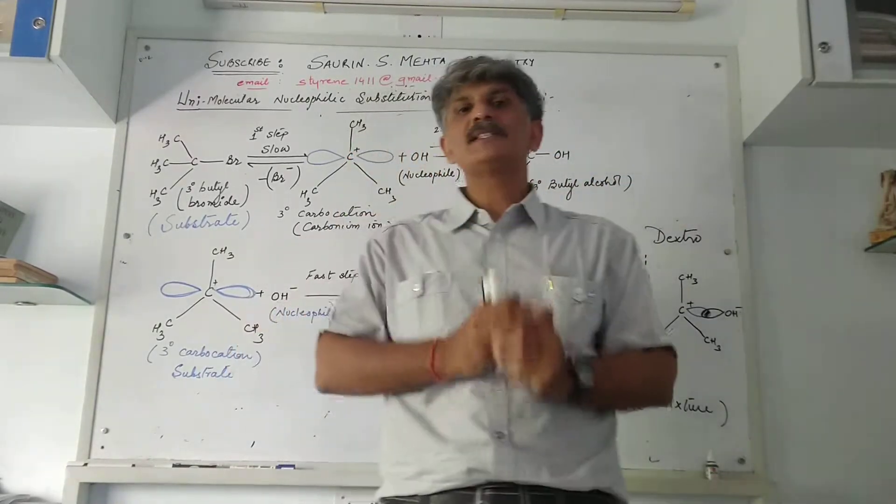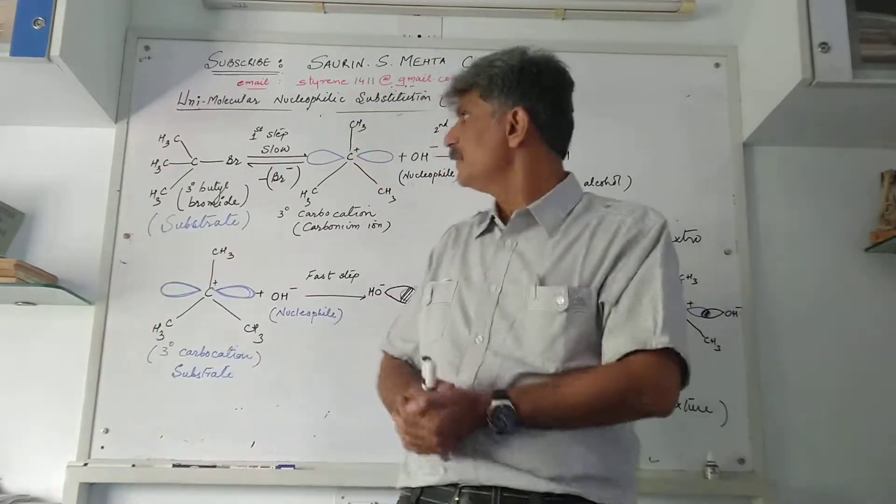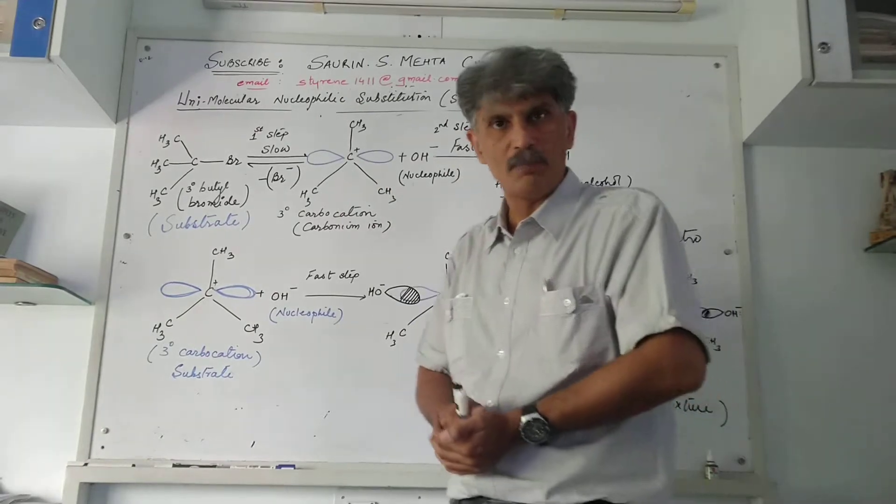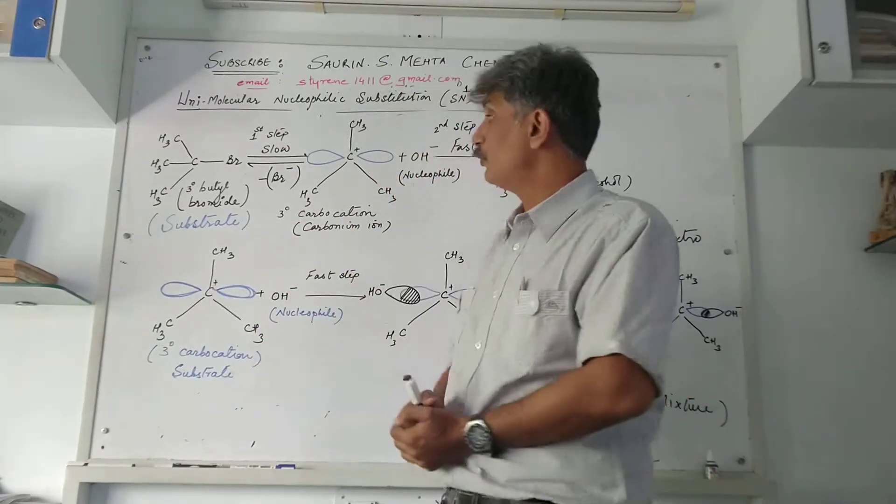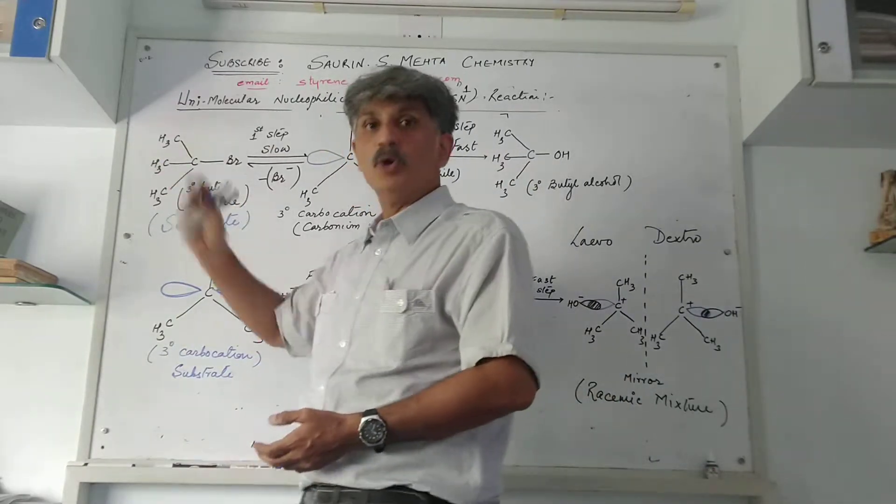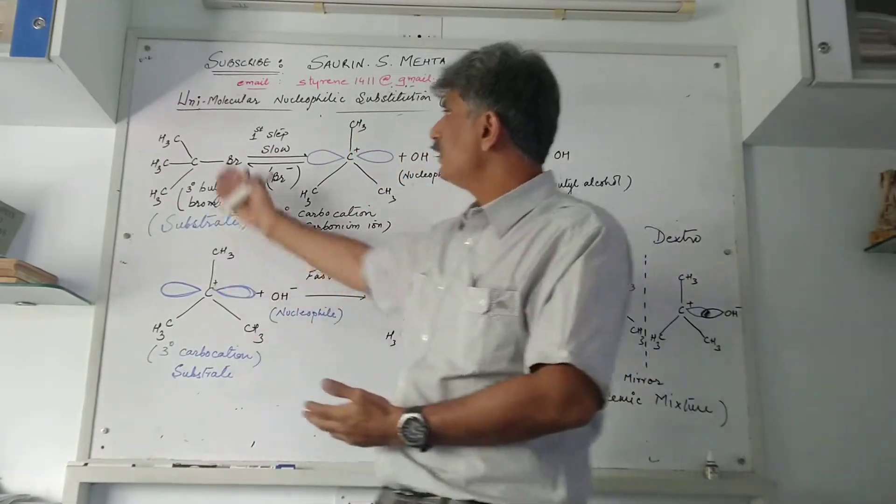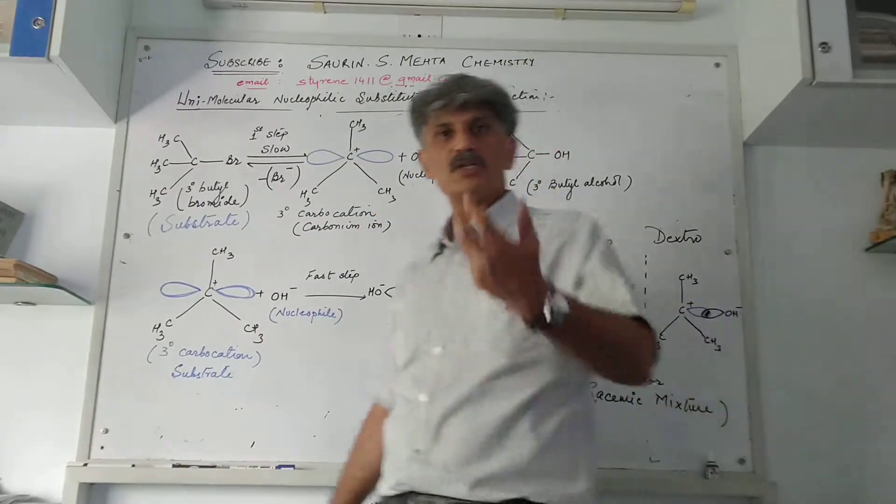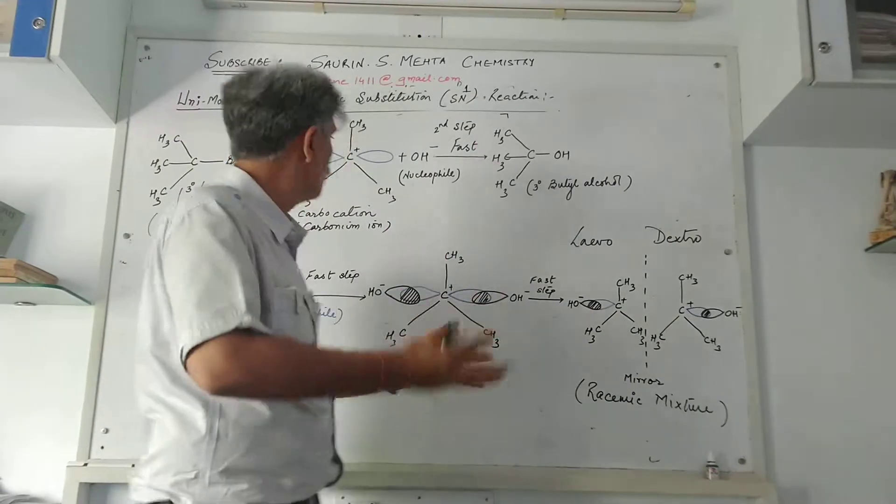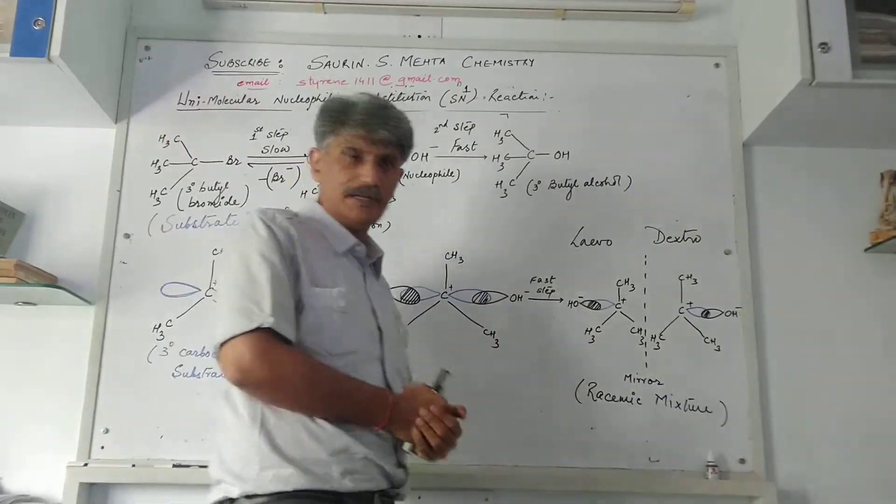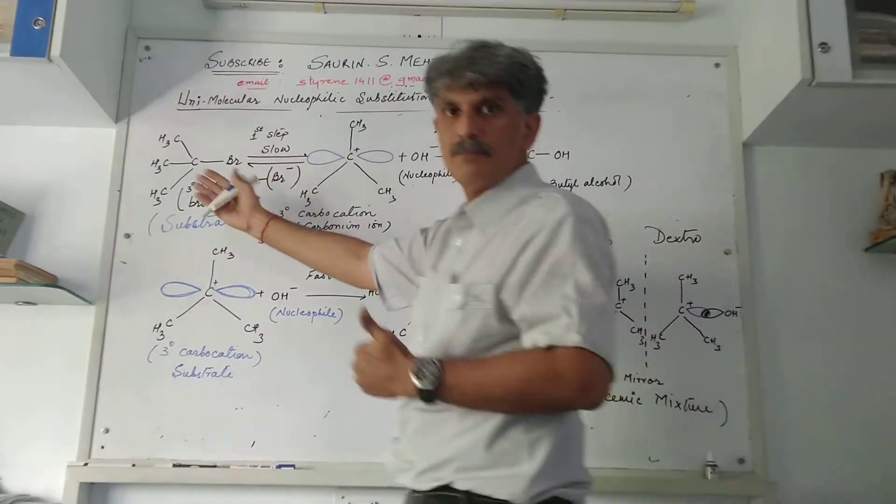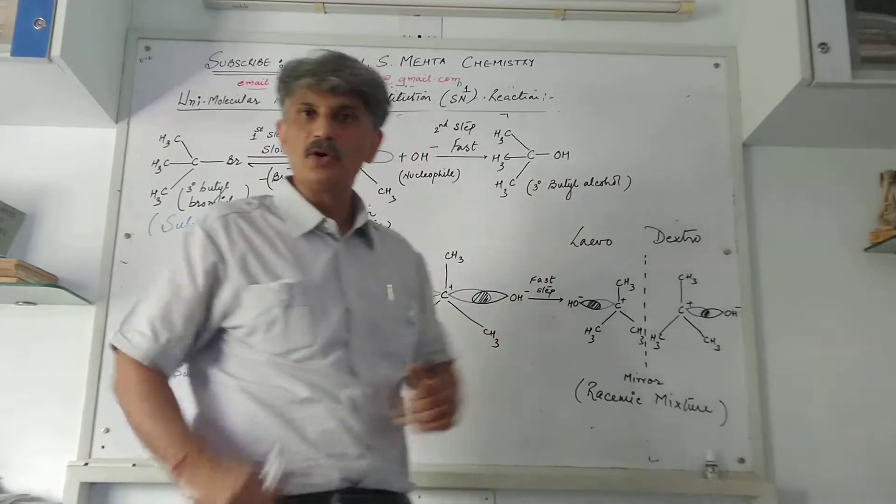For example, we have chosen tertiary butyl bromide, or IUPAC name 2-methyl-2-bromopropane. When it undergoes reaction with polar solvents like water and alcohol combined with potassium hydroxide, the Br gets replaced and gives you the alcohol accordingly.